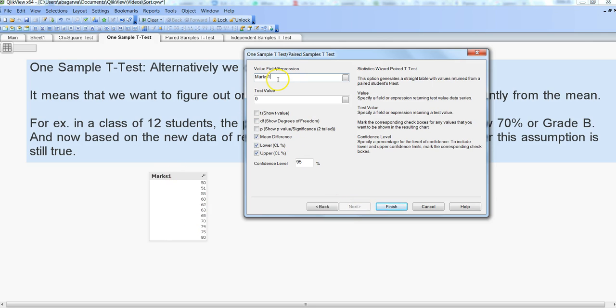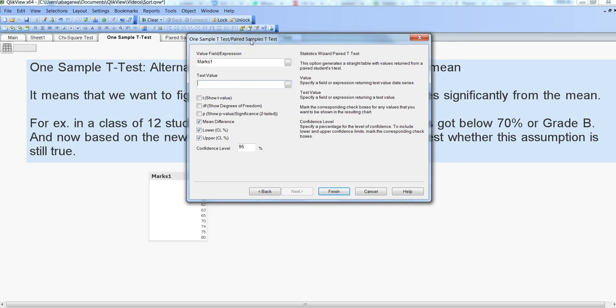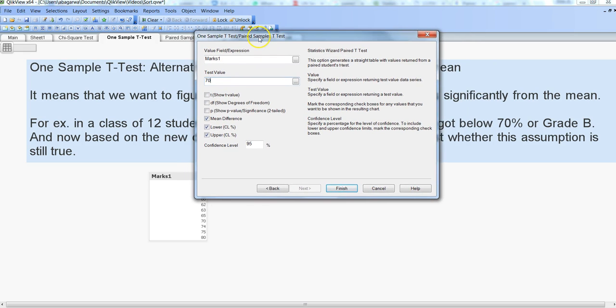What I've mentioned here is that Marks1 is the field we want to test, and the test value against which we want to test is 70 - that's the 70% we want to test. We want to show t-value, df, and p-value or significance two-tailed value. These are the different parameters we want to show in the table.